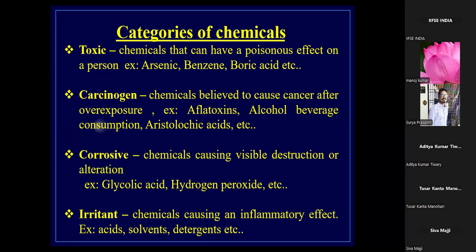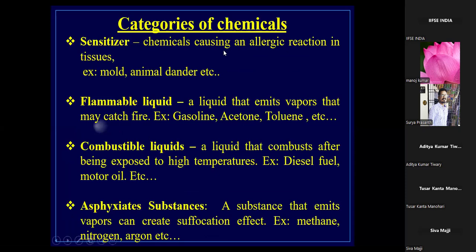The next part of chemical classification is sensitizers. Sensitizers cause allergic reactions to the tissues. For example, molds and animal dander — the hair that falls from pets like dogs and cats causes allergic skin reactions. Then there are flammable liquids: a liquid that emits vapor and may catch fire. Examples include gasoline, acetone, and toluene.